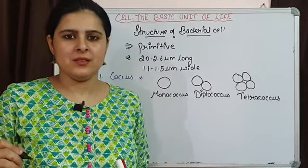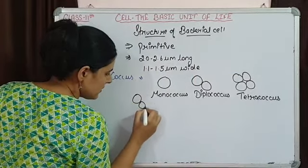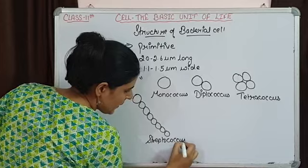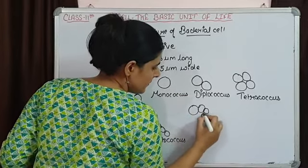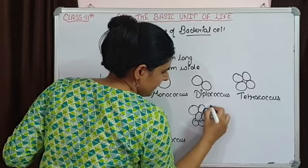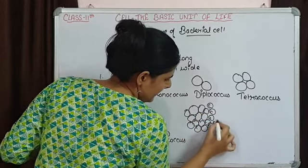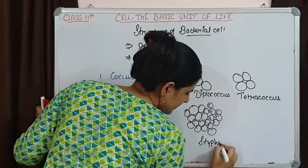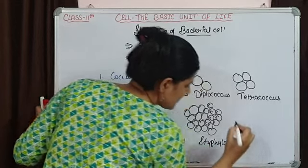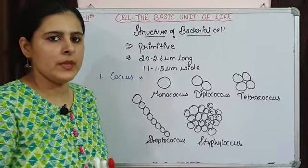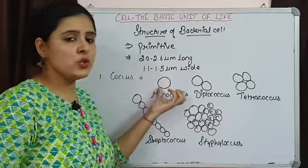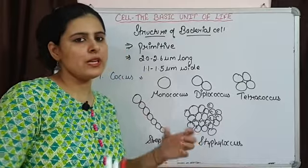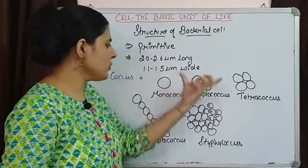If cocci are present in chains, then we use the word streptococcus — this is how a chain is formed. Or if they are present in a cluster, that is known as staphylococcus, like staphylococcus aureus. So, round or spherical shaped bacteria can be present individually, in groups of two or four, in a chain-like structure, or in a cluster.